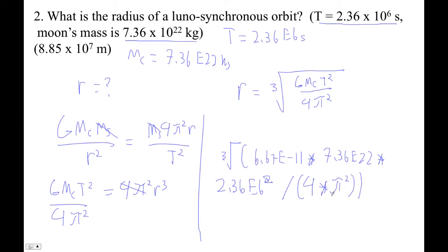So I'm doing this cube root of 6.67 e minus 11 times 7.36 e22 times 2.36 e6 squared, divided by parentheses. So it's important that you do these parentheses. If you don't do these, you'll divide by 4 and then multiply the result by pi squared, which is not what you want.